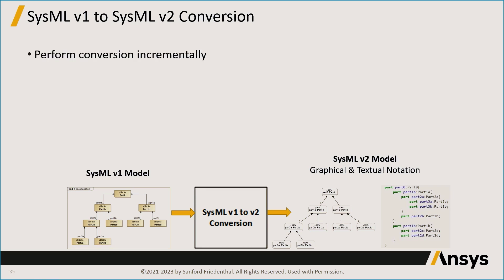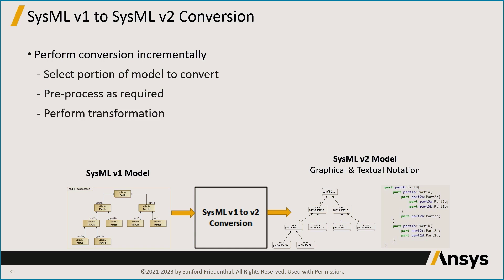You want to perform the conversion incrementally — probably don't want to do it in one big bang. Select a portion of the model to convert, pre-process it as required. There is guidance in the transition materials that covers what's involved in pre-processing. Perform the transformation — this may be automated — but validate that it's correct. Then there's an opportunity to reorganize and refactor the model to get the full benefit of v2, which is where a lot of the additional manual effort may be required.